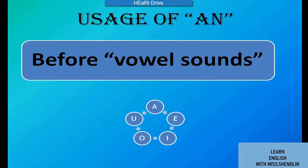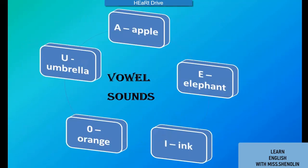We use 'an' before vowel sounds. The vowels in the English alphabet are: a, e, i, o, u. It is very important to know the sounds of the vowels. A — apple, the sound of 'a' is 'a.' E — elephant, the sound of 'e' is 'e.'